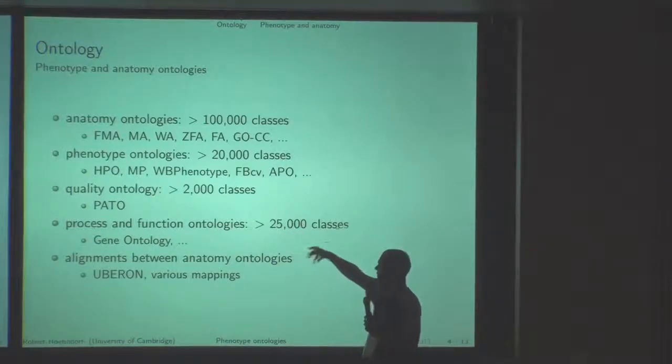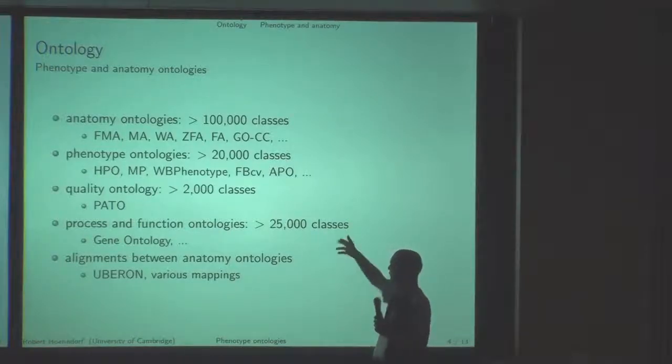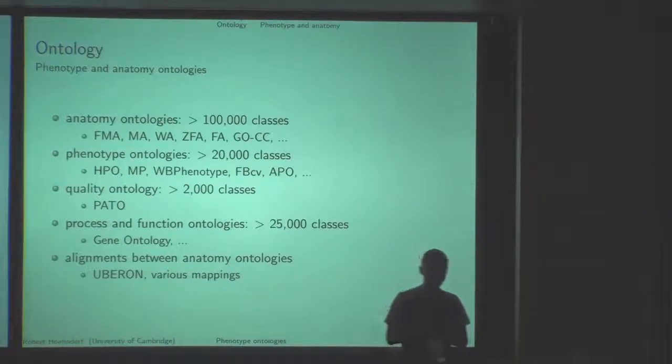There are ontologies of qualities, the Gene Ontology and function ontologies, physiology ontologies, other resources like mappings and so on.